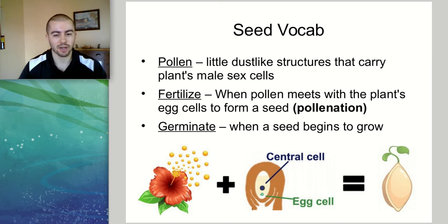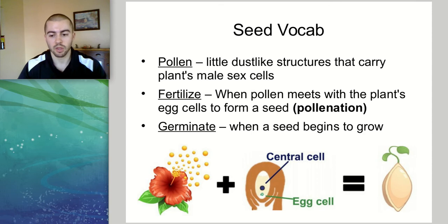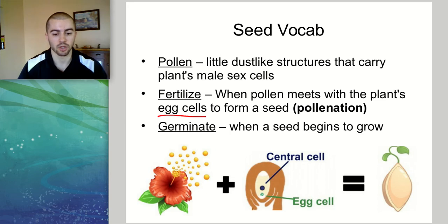Pollen carries the plant's male sex cells — the sperm cells for a plant. In order for a seed to be made, we need that pollen to meet with a plant's egg cells. We'll talk more about plant structures and their sexual reproduction in a future video.